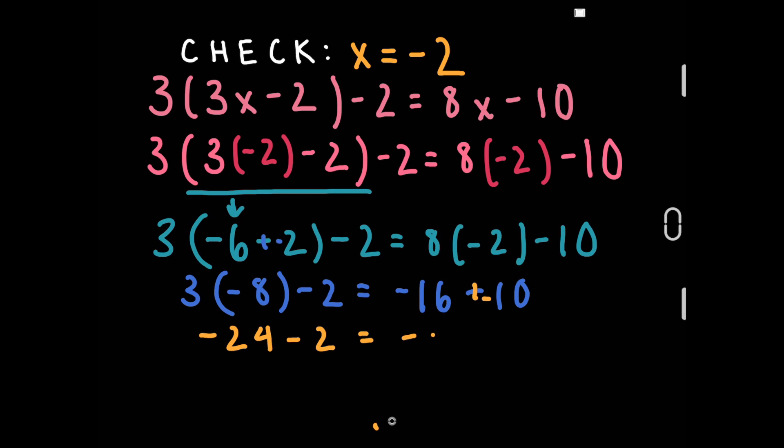On the right side, 8 times negative 2 is negative 16 minus 10 is negative 26. Both sides match so this is the right answer.